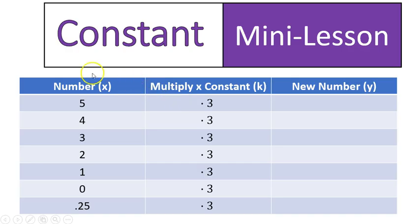So we have five over here. Times three is going to give us some kind of new number. Four times three, three times three, etc., all the way down. We even have a decimal at the bottom, 0.25 times three. So three is our constant, and when we multiply our x value times our constant, we'll get a new number. And that is the basics of what a constant is.